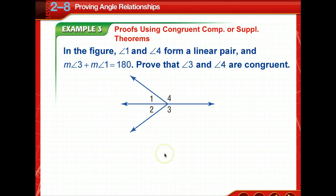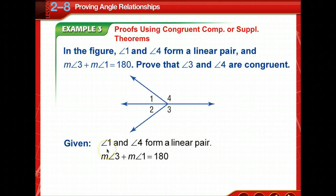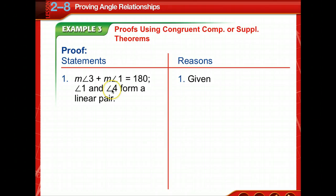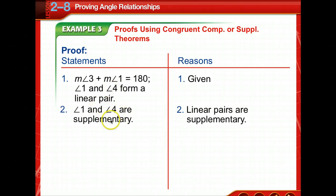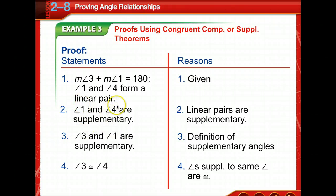Now we'll do a proof using congruent complement or supplement theorems. Write down what is given: angle 1 and angle 4 form a linear pair, and the measurement of angle 3 plus the measurement of angle 1 is 180. Also write what you're going to prove: that angle 3 and angle 4 are congruent, and draw your figure. Angles 1 and 4 are supplementary because linear pairs are supplementary. Angles 3 and 1 are supplementary by definition. Since angles 3 and 4 are both supplementary to the same angle, they are congruent.